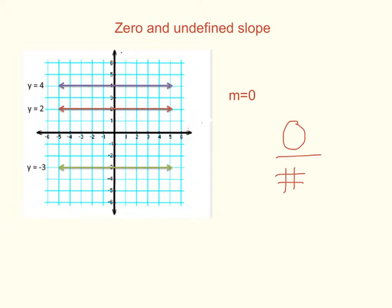We also know that when we have the answer of zero, it's zero divided by a number. It doesn't matter what the number is. If it's zero divided by a number, then our slope is zero. And we can see that our horizontal lines are parallel to the x-axis.